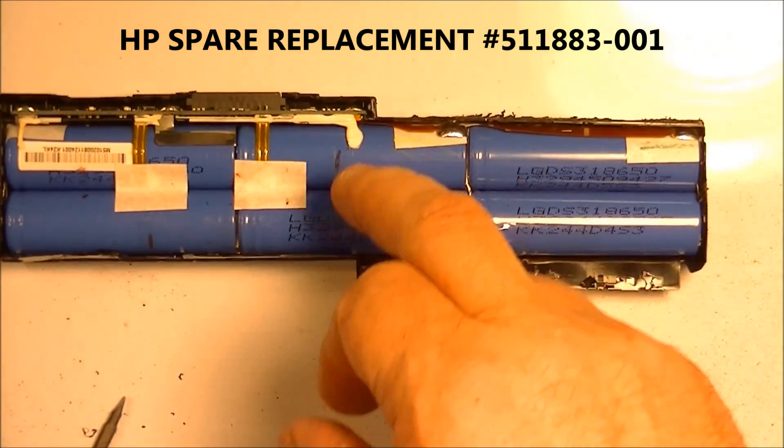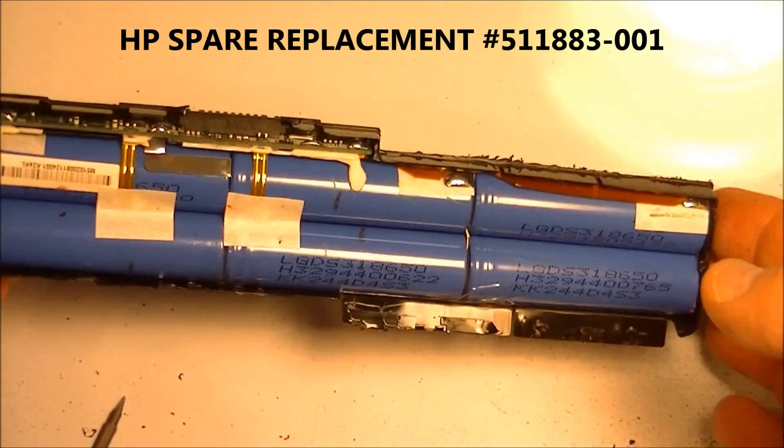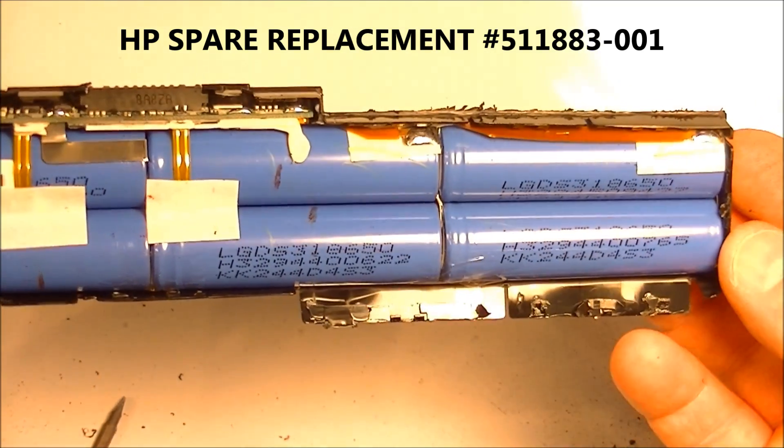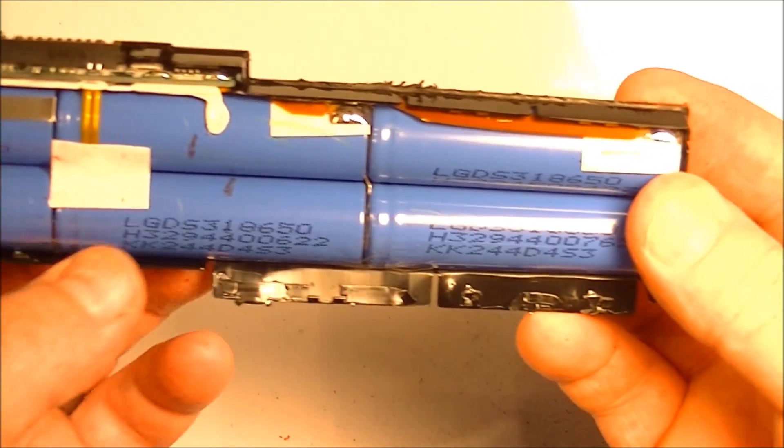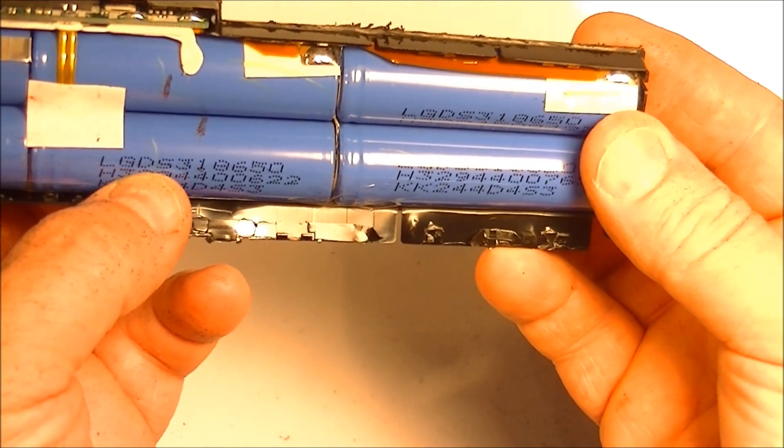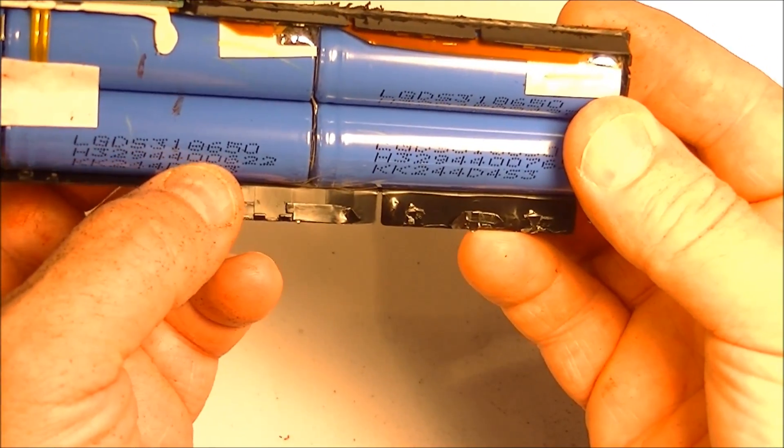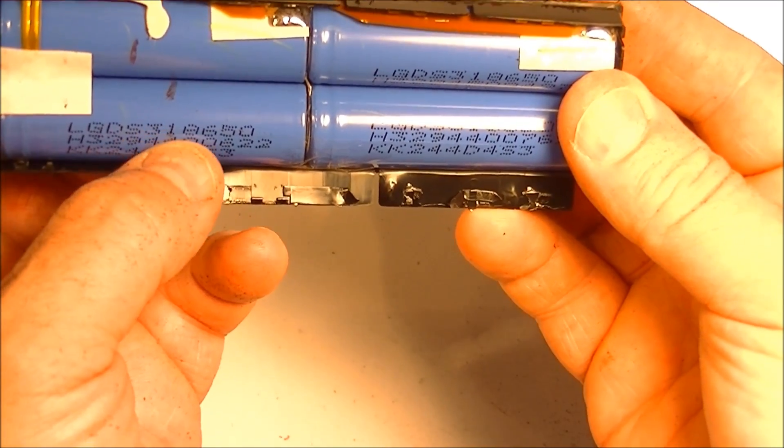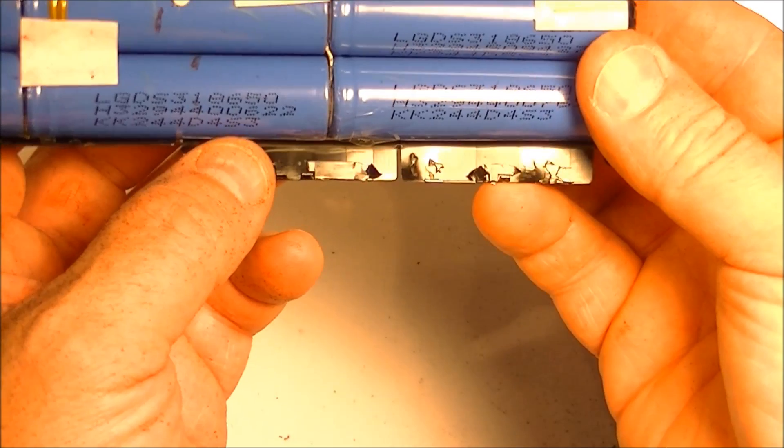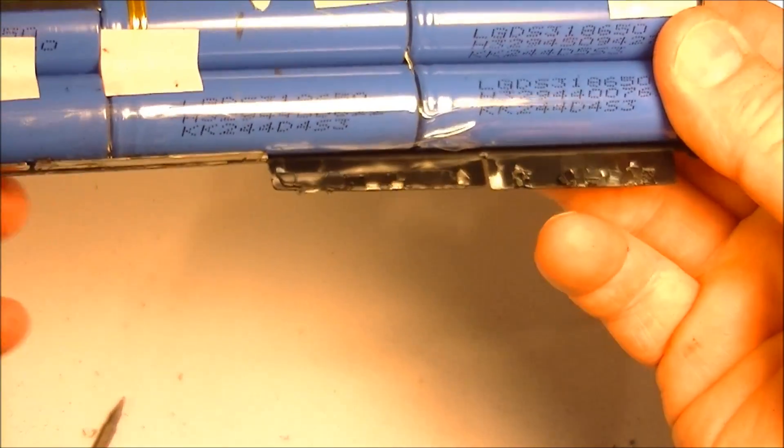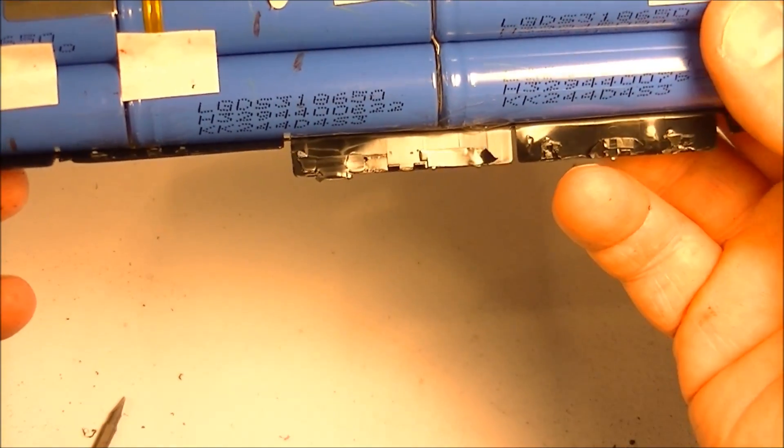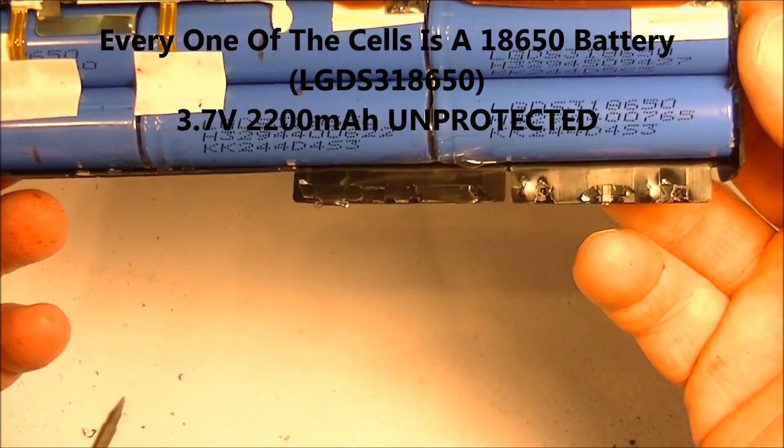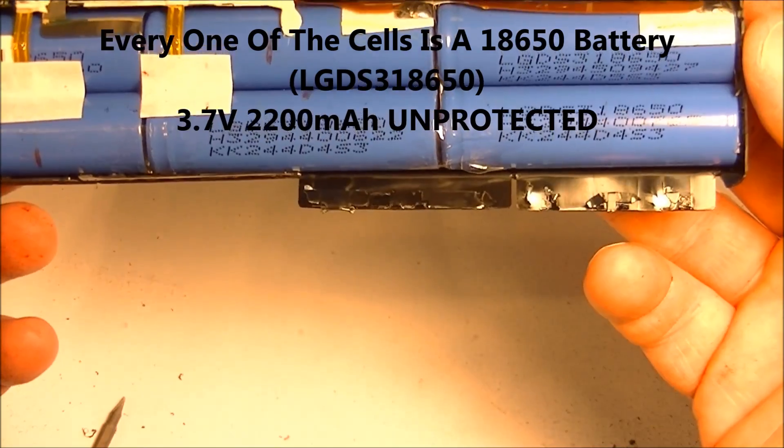Alright I've got 1, 2, 3, 4, 5, 6 lithium cells in there. I'm going to try and harvest them all and see if they charge or not. They look like LG, so they're LG DS3 18650's which is exactly what they are. That's what I thought I would find in here. What rating they are, I'll have to look them up and see what they come up as.